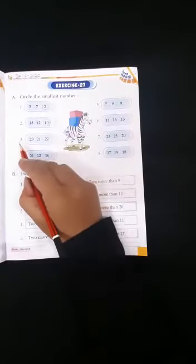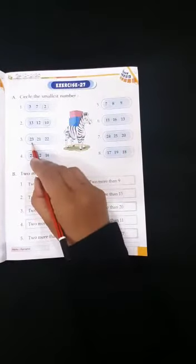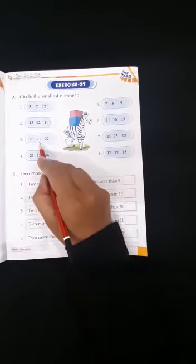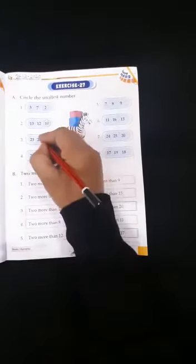Come to the next. 23, 21, 22. Yes, 21 is the smallest number. Therefore, we will put circle on 21.